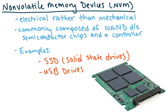Moving on to non-volatile memory devices, or NVMs — these operate electrically rather than mechanically, so there are no moving parts. They're commonly composed of NAND die, semiconductor chips, and a controller. Examples include solid state drives, which most of you probably have in your laptop, and USB drives. These are also called flash storage.